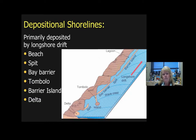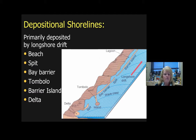There are also depositional shoreline features. Of course there are beaches — you might ask what a spit is, and you're about to learn. There's also a bay barrier, a tombolo which is one of my favorites, a barrier island, and deltas.